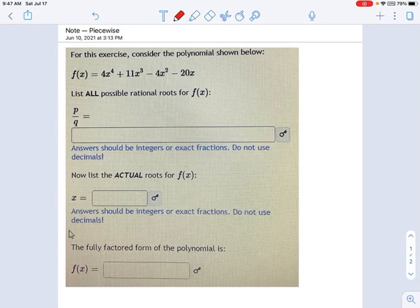So I want to go over one special case of using the rational roots theorem, which is when you see that the last term in the polynomial, the trailing term, has a factor of x in it.